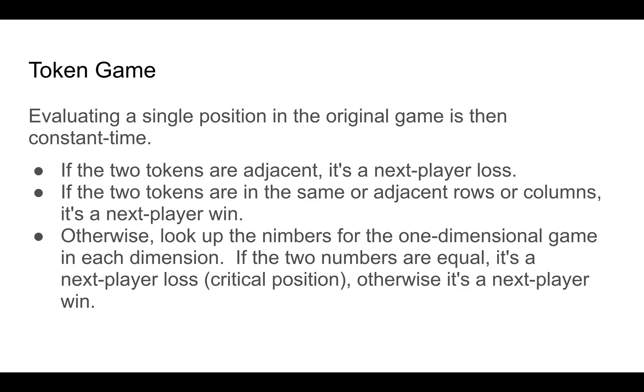Evaluating a single position in the original game is constant time. If the two tokens are adjacent, it's the next player loss. If the two tokens are in the same or adjacent rows or columns, it's the next player win. Otherwise, we take the two nimbers, one from x and one from y, for our reduced one-dimensional game and say, if these nimbers are equal, if these two nimbers are equal, then it's the next player loss. It's a critical position. We can exclusive or, these will only be zero if the nimbers are equal. Otherwise, it's the next player win. So for any particular position in the original game in constant time, we can tell if the player to move is going to win or if the other player is going to win.